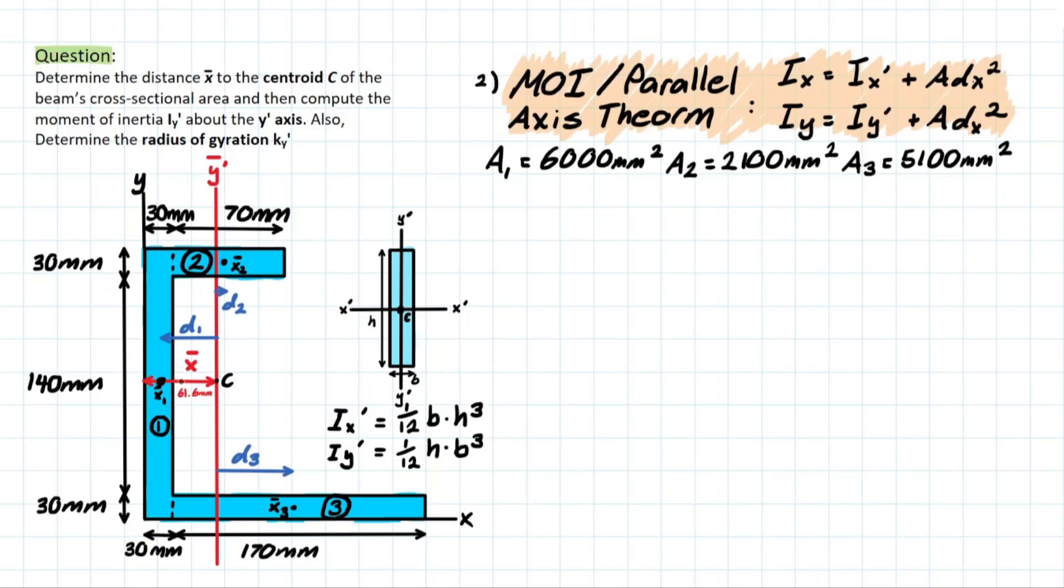So pretty much that means it wants us to find the distance from that axis we're referring to, which is Y bar prime, up to that centroid of the shape. So for shape one, we would be looking at D1. And pretty much what that distance is going to be is we're going to take that distance from Y to the centroid that we found previously, which is 61.6 millimeters.